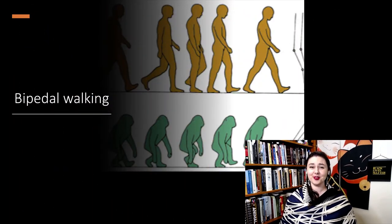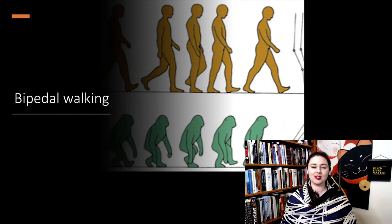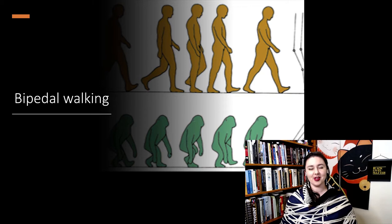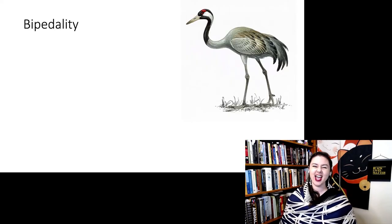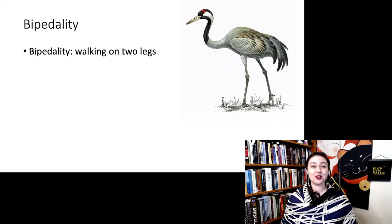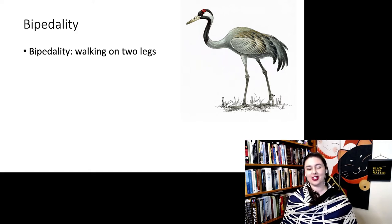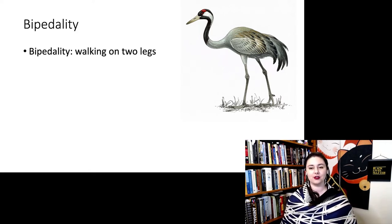If you hadn't noticed already, humans are bipeds. It's probably how you locomote most of the time. At least most humans do. So bipedality is just a fancy word that means walking on two legs. Bi means two, ped means feet. So we have two feet and also two legs.